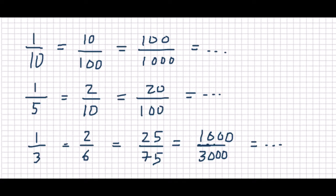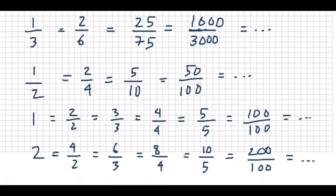1 over 5 is equivalent to 2 over 10, 20 over 100, and so on. We can also see that whole numbers can be written as fractions — for example, 2 is equivalent to 4 over 2, 6 over 3, 10 over 5, 200 over 100, and so on.